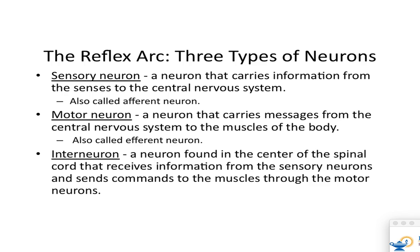Interneurons are what's in your central nervous system — they process the information that comes in from sensory neurons. Where are the two places we have the highest density of interneurons? Right in the brain and spinal cord. Perfect.